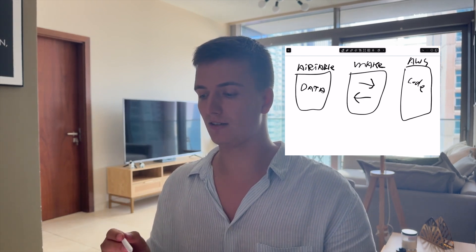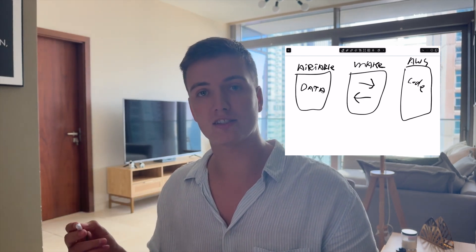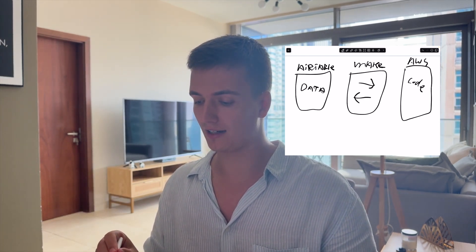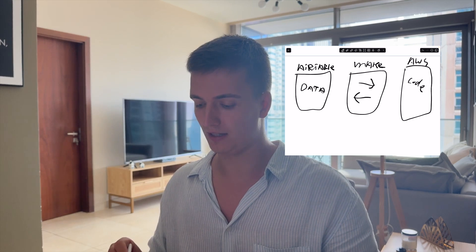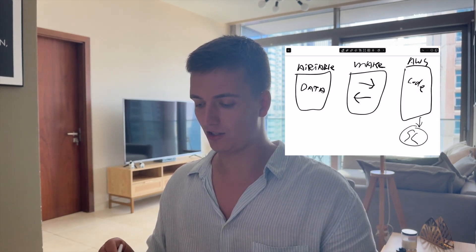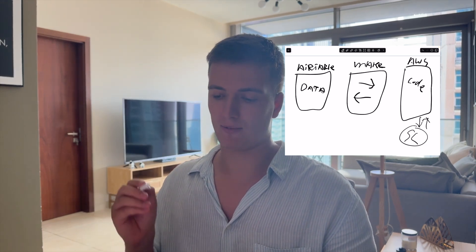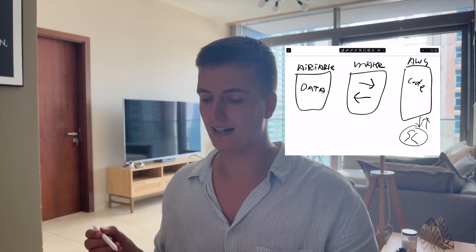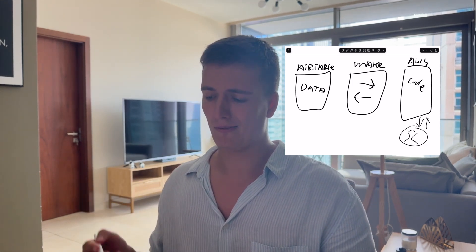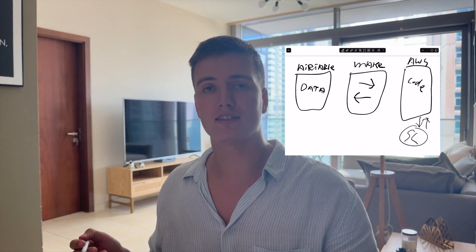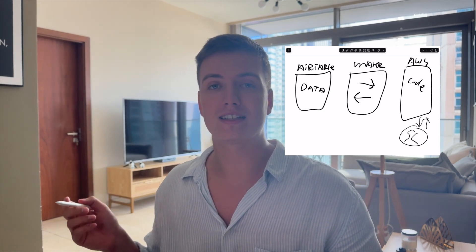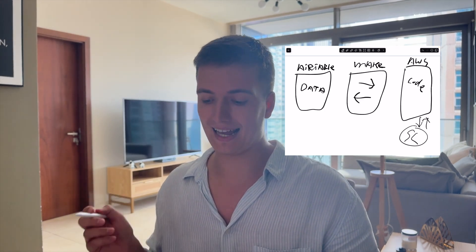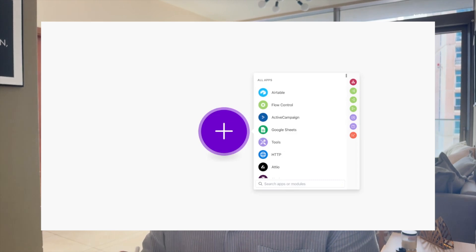So the final build is: Airtable holds the data, Make.com requests to Amazon to get the code, the code fetches from SmartLead, averages everything, and gives it back to Make.com which then puts it in Airtable. If this sounds complicated, it's actually not.